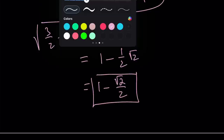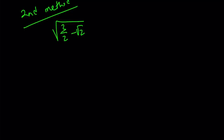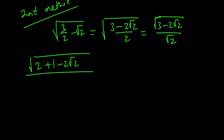Let's take a look at the second method. I'll rewrite the original problem: I'm trying to simplify this radical. For the second method, I want to make a common denominator first, writing it as (3 minus 2√2) over 2. Then I separate the numerator and denominator to get √(3 minus 2√2) divided by √2. The numerator is special because 3 minus 2√2 can be written as 2 plus 1 minus 2√2 under the radical.